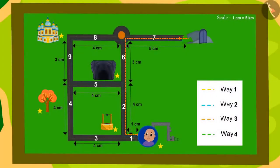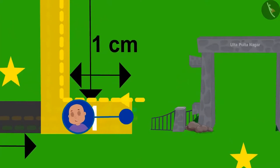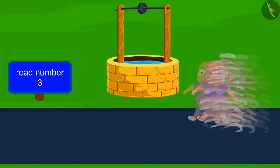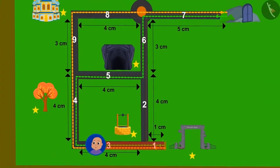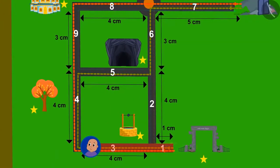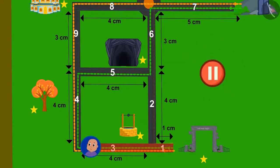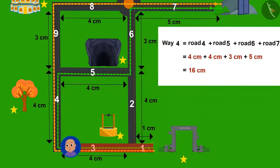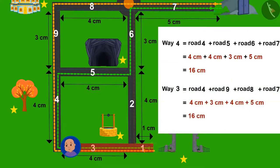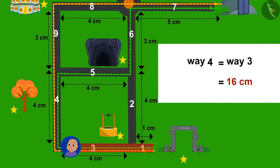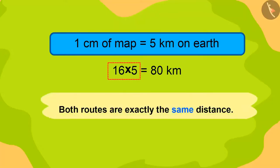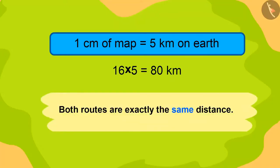Bablu was going towards the shortest path when suddenly he was pulled towards road number 3, towards the magical well. Now if Bablu has 2 exit routes, are these 2 paths at equal distance? Find the answer by pausing the video. Both paths are exactly at the same distance — the total map distance is 16 centimeters, so the actual distance is 16 multiplied by 5, which is 80 kilometers.